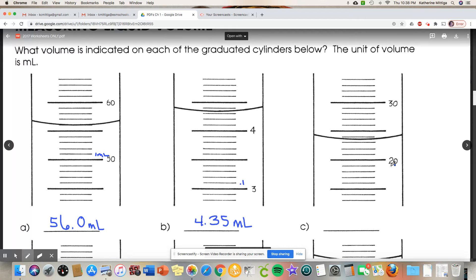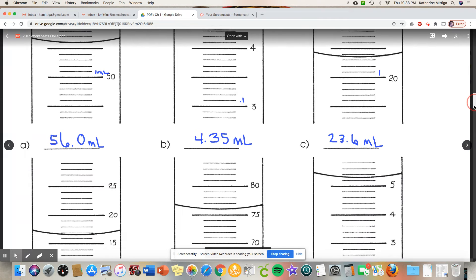This one we cannot go that far, we cannot estimate two decimal places because each of these are worth one whole milliliter. So 21, 22, 23, 24, so it's 23 point six. Now what if you say I think that's 0.5 or 0.7? That's fine because that last estimated digit is indeed that estimation, and we know that as chemists.